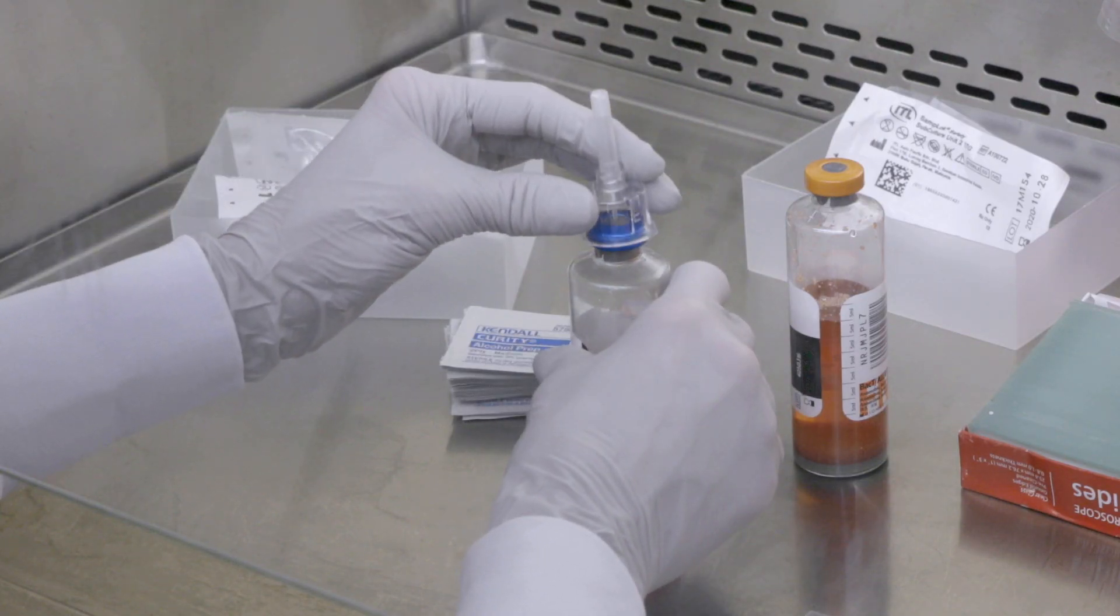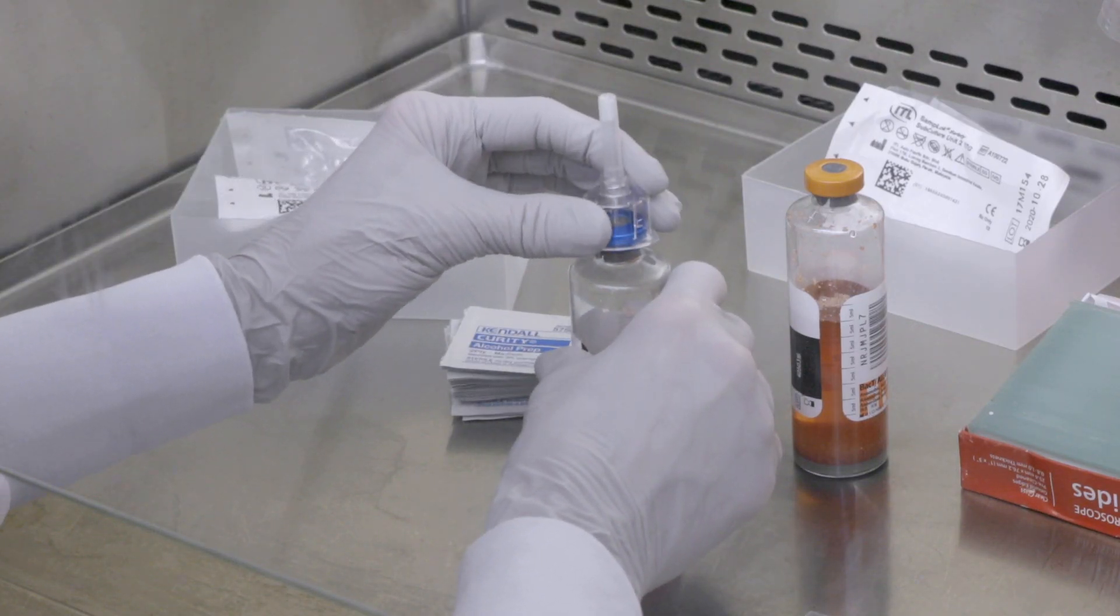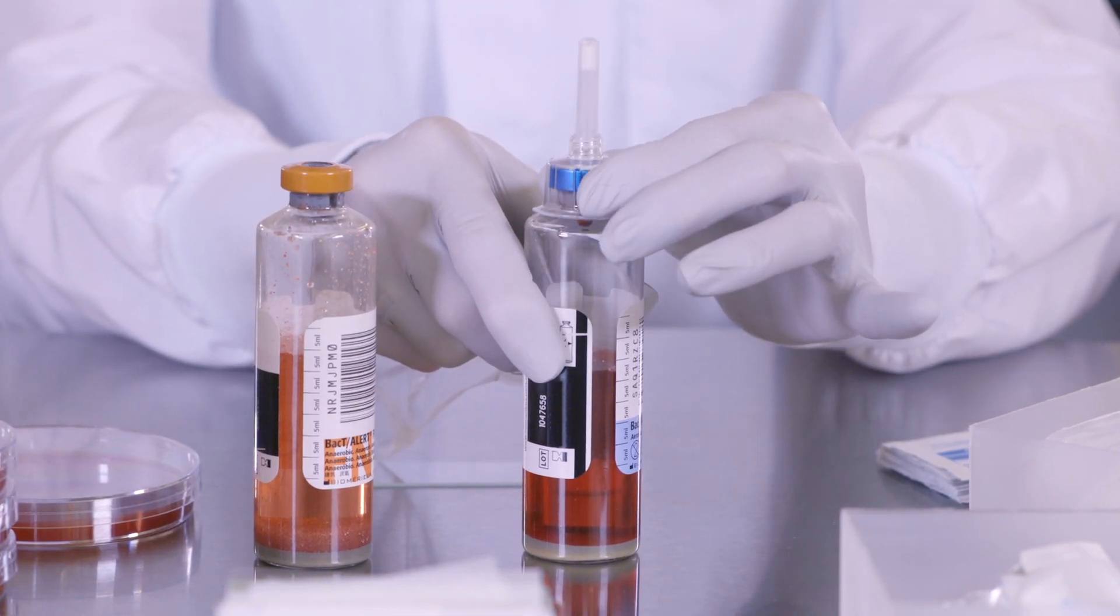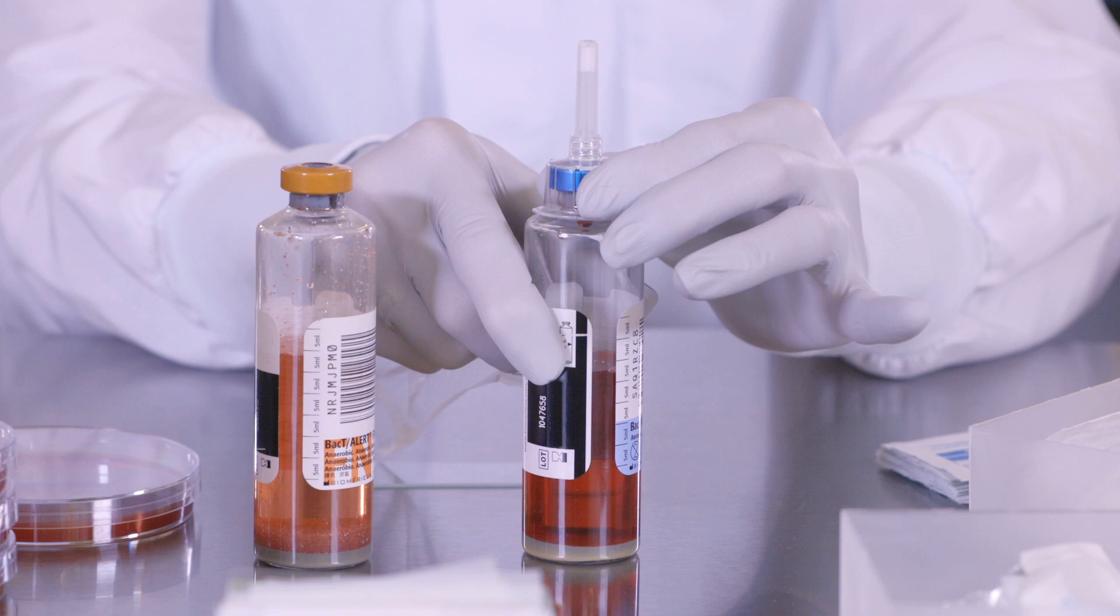Insert SCU-2 into the bottle septum by holding the bottle with one hand and with the other hand, place SCU-2 over the center of the culture bottle septum. Now, press SCU-2 down, inserting the piercing tip into the septum.